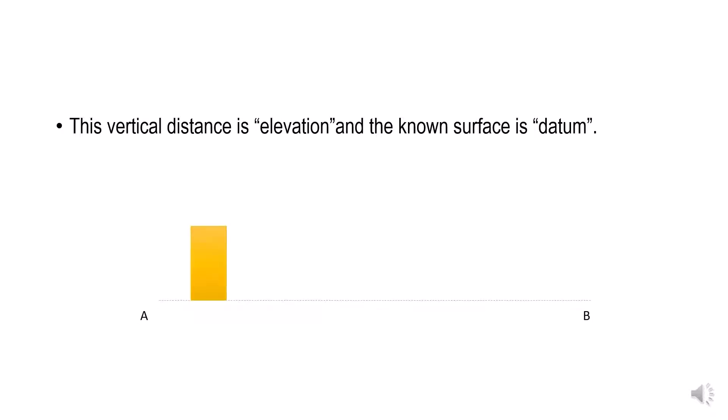So AB is the datum. We need to locate the particular height of a particular object — let it be H. We need to find out what is the height of that particular object. We use a leveling method where height H is determined with respect to datum AB, or we measure a height H1 and at that height we locate an object. So the leveling method can be used for two objectives.